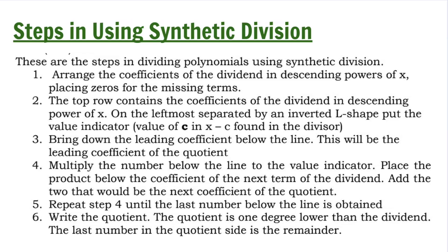Step 4: Multiply the number below the line to the value indicator. Step 5: Place the product below the coefficient of the next term of the dividend. Step 6: Add the two — that would be the next coefficient of the quotient. Repeat step 4 until the last number below the line is obtained. Step 7: Write the quotient. The quotient is one degree lower than the dividend. The last number in the quotient side is the remainder.